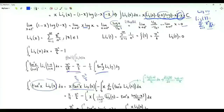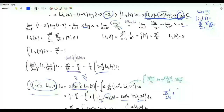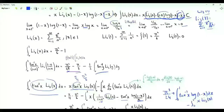The derivative gives the dilogarithm of x over (1 plus x squared) minus the inverse tangent of x times log(1 minus x) over x. This integral equals pi cubed over 24, plus the integral from 0 to 1 of the inverse tangent of x times log(1 minus x), minus the integral from 0 to 1 of x times the dilogarithm of x divided by (1 plus x squared).